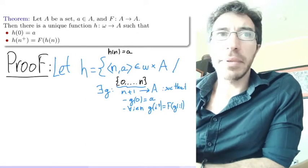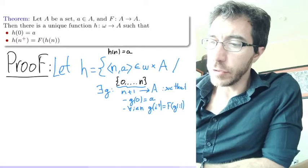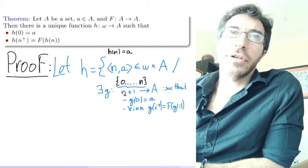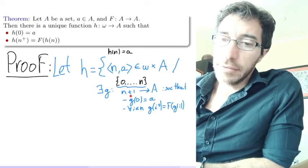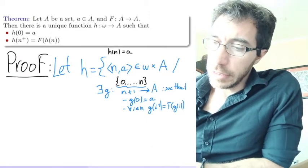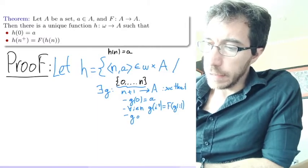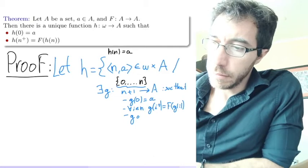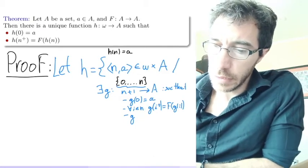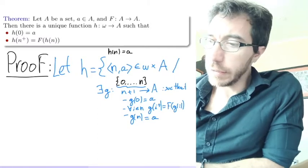and for all i in n, g of i plus 1 equals f of g of i. So far we're just saying that g behaves the same way as h should behave. The only difference so far being that g is defined only up to n plus 1, and it's not defined all the way through, which is harder to define because in this case it's just a finite thing. And we're going to ask for one more thing, and is that g of n equals a.